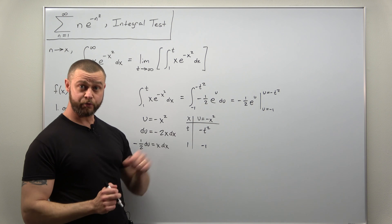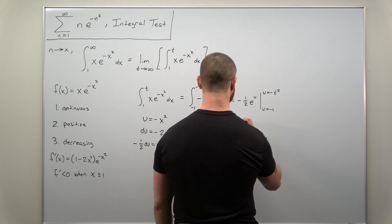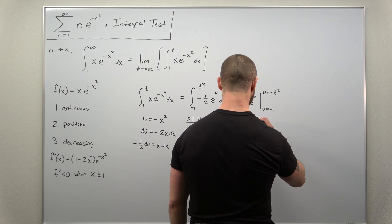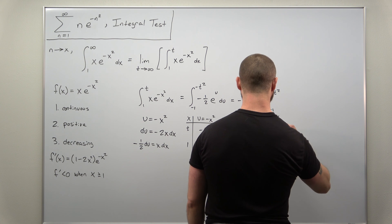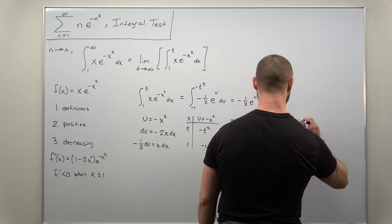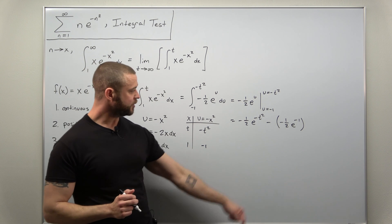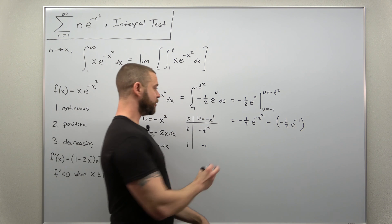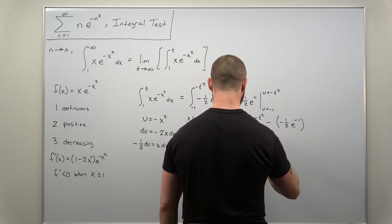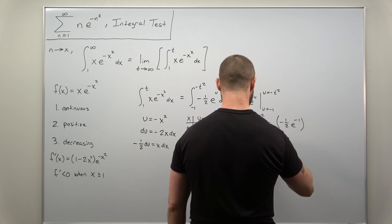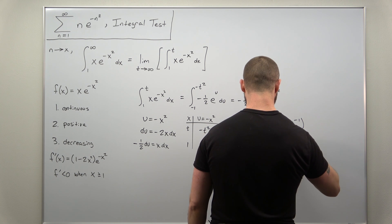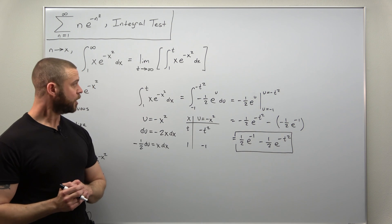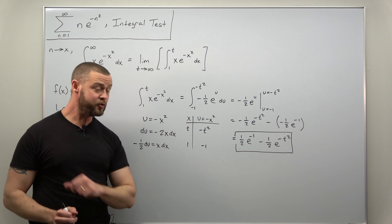Plugging in carefully with signs: we get negative one half times e to the negative t squared, minus negative one half times e to the negative one. The two negatives cancel, and we can write this as positive one half times e to the negative one minus one half times e to the negative t squared. That is the value of our integral.